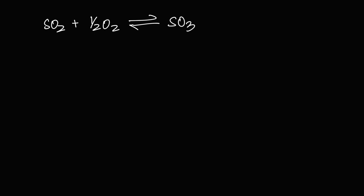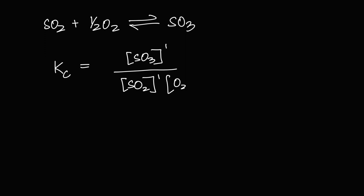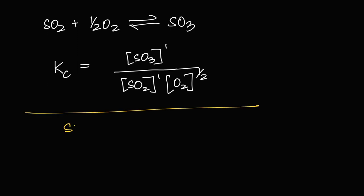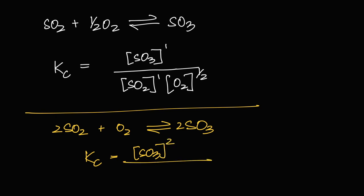For SO₂ + ½O₂ ⇌ SO₃, the Kc expression is [SO₃] over [SO₂][O₂]^½. O₂ has a power of half, which means square root. Now if you double the equation to 2SO₂ + O₂ ⇌ 2SO₃, the Kc becomes [SO₃]² over [SO₂]²[O₂]. This will be a different value because it's specific to that equation — which is twice the original equation.